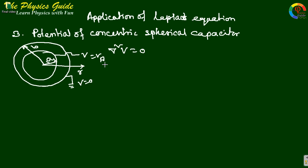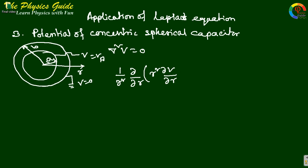This is a one-dimensional problem because we are interested only in the r-direction; the theta and phi directions have constant potential. So the potential varies only with respect to r. Taking del-squared in spherical coordinates in one dimension, we get: (1/r²) d/dr (r² dV/dr) = 0.